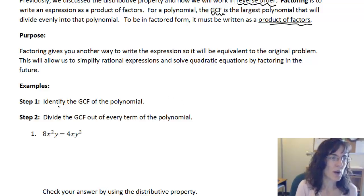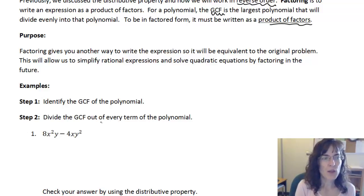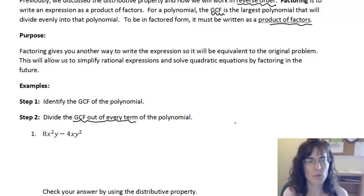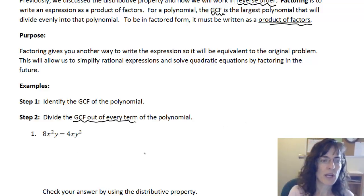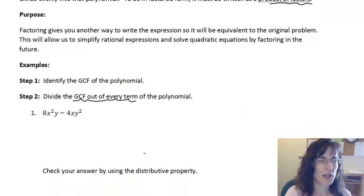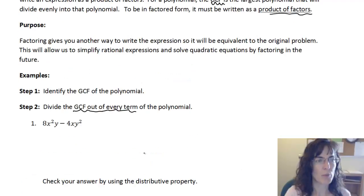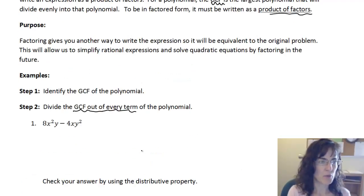Identifying the greatest common factor of a polynomial will be our first step. Then we'll divide that greatest common factor out of every term in the polynomial. And then we will check our answer using the distributive property. So let's take a look at an example.